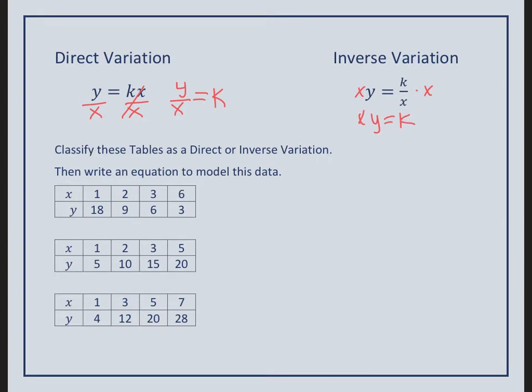When we look at this first table, we are going to see if when we divide them, is it the same, or when we multiply them, is it the same? And if we do both of these and they're not the same, then the answer is neither. We're going to draw a new table. We're going to see if it's inverse - when I multiply them, I should have a constant k value. Or if it's direct, when I divide them, I should have a constant k value. So I have four terms here. I'm going to take these first two numbers and multiply them. 1 times 18 is 18. Next is 2 times 9. Then 3 times 6. And then 6 times 3.